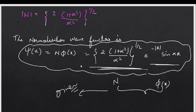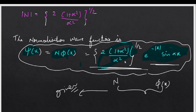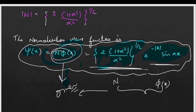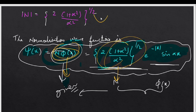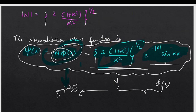Solving for N, since it is squared we take the power of 1/2. We now have the normalized wave function: psi(x) = N·phi(x), where phi(x) is the original function e^(-|x|) sin(αx) and N is the normalization constant we just found. This is the complete normalized wave function satisfying the normalization condition.